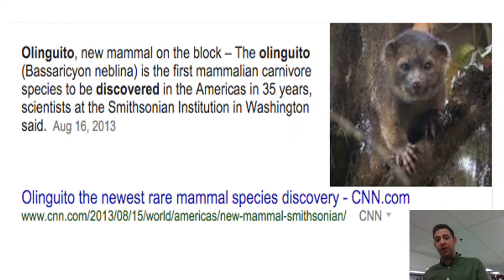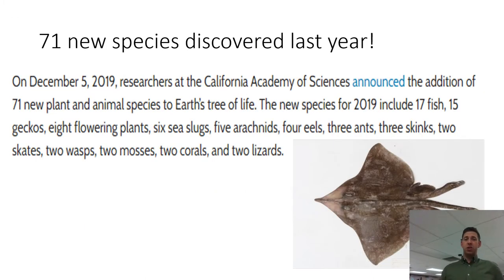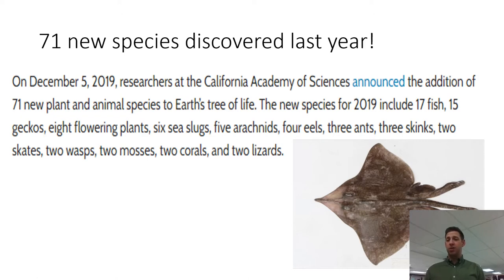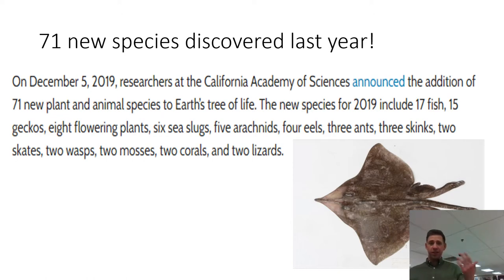A quick example of newly discovered mammals: there's a large mammal that lives in trees in Colombia that we literally didn't know existed until a few years ago — it's pretty amazing to think there are big animals out there that have never been photographed or cataloged. Even just last year, a quick Google search shows 71 species discovered: 15 geckos, sea slugs, arachnids, eels, and skates. Millions more are out there that we don't know about.